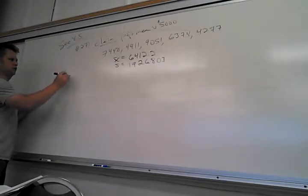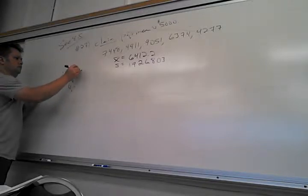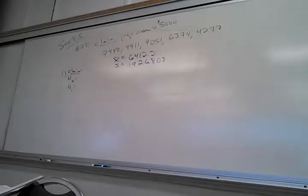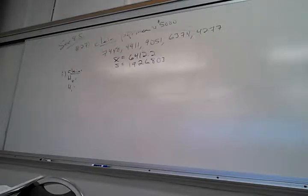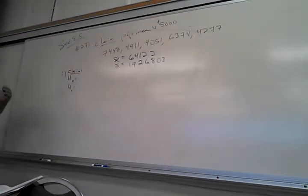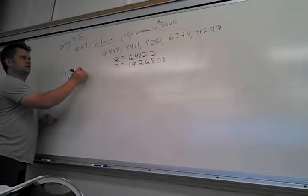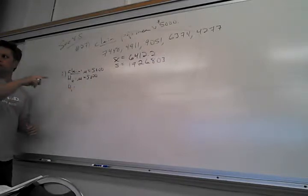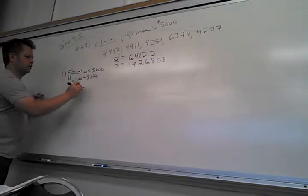So what's step one — what's the claim in math? Mu equals 5,000. Yeah, mu is 5,000. Which one is that? The null. And then what's the alternative? It's got to be not equal to 5,000. So how many tail tests is it going to be? Two.